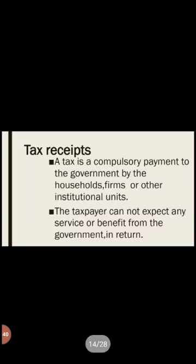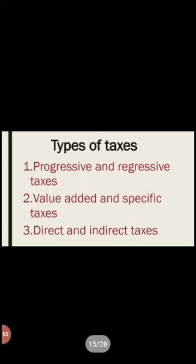Tax receipts are compulsory payments to the government — taxes must be paid, and there is no direct benefit to the taxpayer in return, because taxes are used for public goods. There are three types of taxes: progressive and regressive taxes, and direct and indirect taxes.